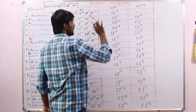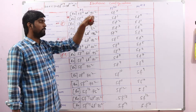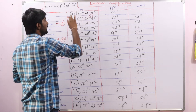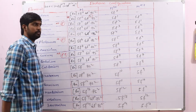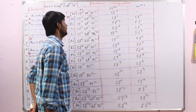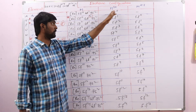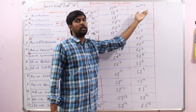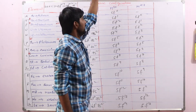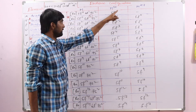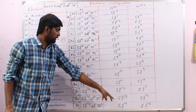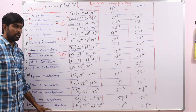In the plus 3 oxidation state: first we remove electrons from the S orbital, because that is the outermost orbital, then from D and from F. Here in the plus 3 state, F0 to F14 — no exceptions, simple. In the plus 4 oxidation state, F0 to F13. So in the plus 3 oxidation state, F0 to F14 from actinium to lawrencium, and in the plus 4 oxidation state, F0 to F13.